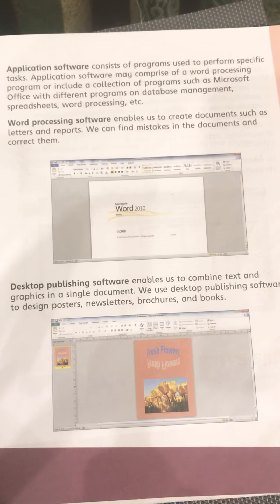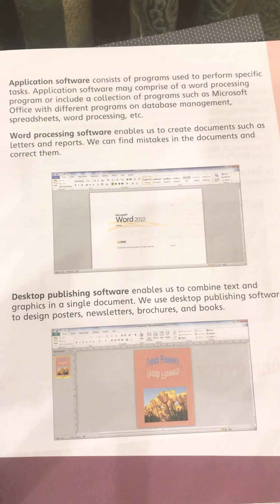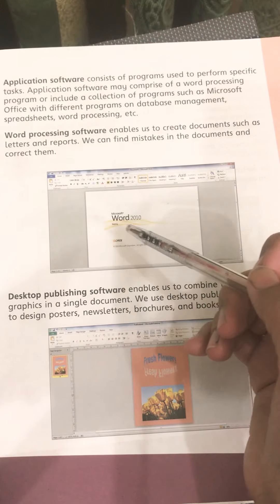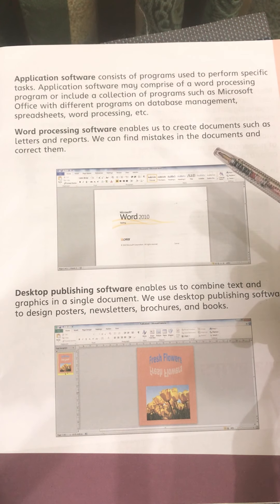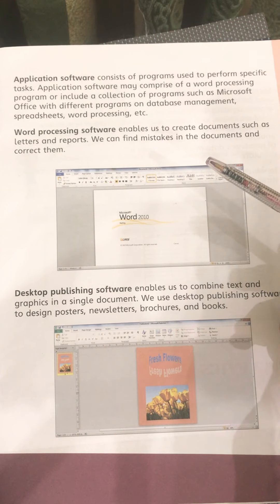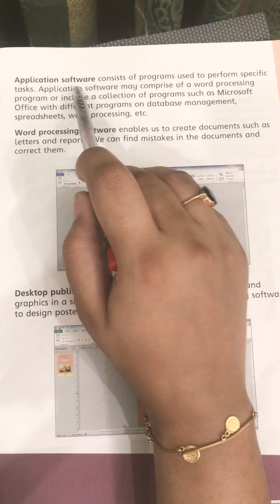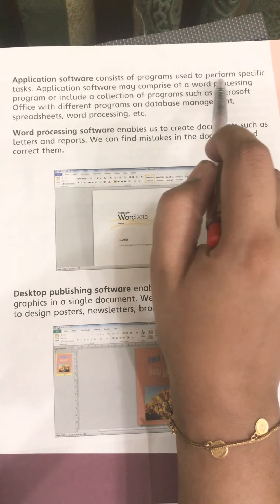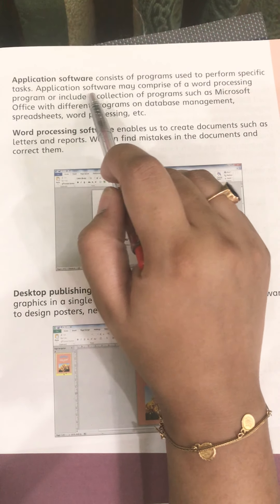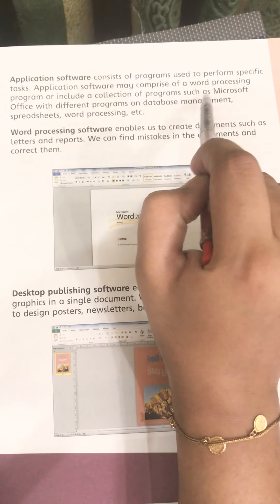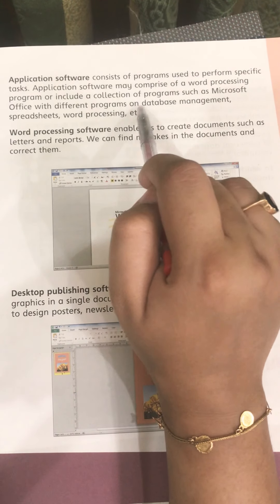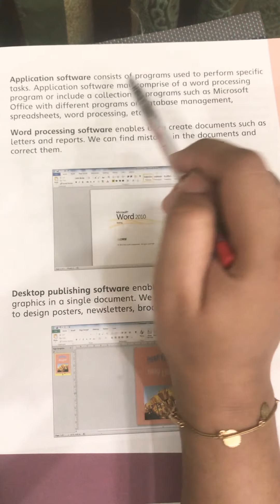Today we will start application software. Application software is the second type of software, and it is not built-in software. You can install it from the internet or with the help of CDs, which are easily available in the market. Application software consists of programs used to perform specific tasks. It may comprise a word processing program or a collection of programs such as Microsoft Office, with different programs for database management, spreadsheet, and word processing.